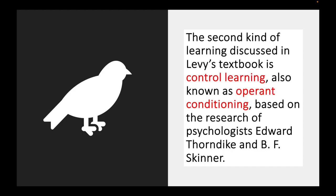The second kind of learning that's discussed in Levy's textbook, he calls control learning. Other researchers, again, and other psychologists like myself, will also use the term operant conditioning. And this is based on the research of psychologists Edward Thorndyke and B.F. Skinner. So this takes us, Pavlov was operating in the early 1900s through about the 1920s, 1930s. Thorndyke and Skinner take us from the 30s, 40s, 50s, all the way up until the 60s. That's when they were doing their research.